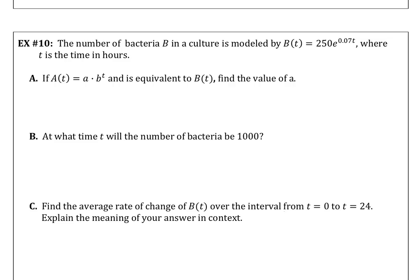Example 10, the number of bacteria in a culture is modeled by B(t) where t is in hours. If A(t) = a*b^t is equivalent to B(t), let's find the value for lowercase a. So we know that A(0) is equal to B(0). a times b^0 is equal to 250e^(0.07*0). That means a is 250.